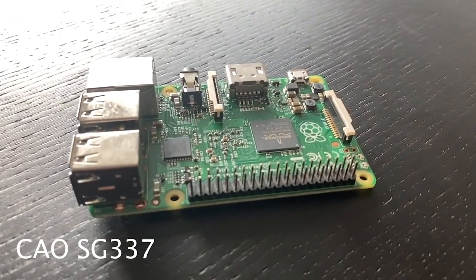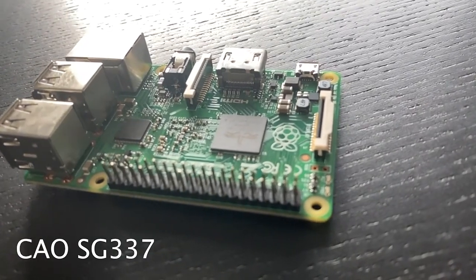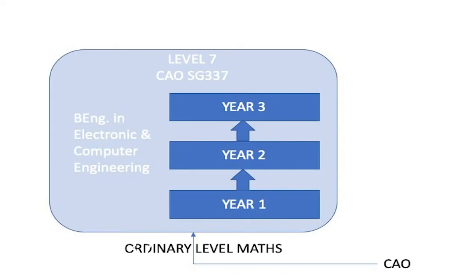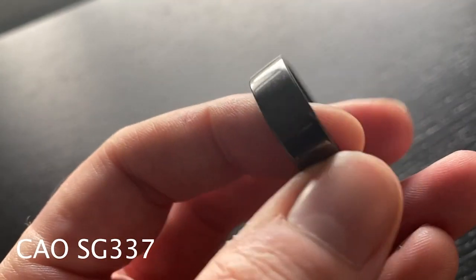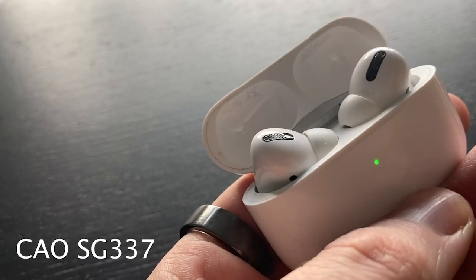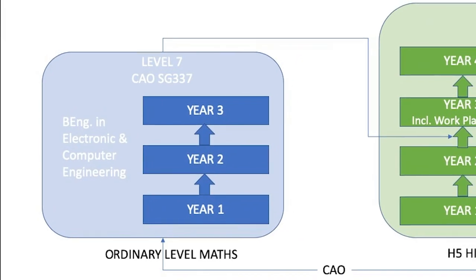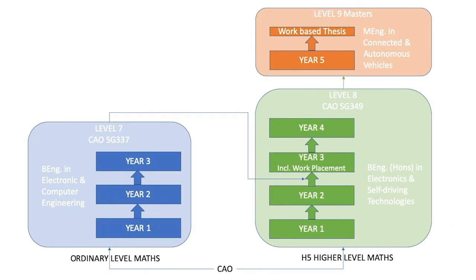If you are interested in technology or engineering but are not doing higher level maths, why not consider our Level 7 in Electronic and Computer Engineering? This is a three-year programme that looks at the design and development of embedded electronic systems — the medical devices that keep us healthy, the consumer devices that keep us entertained, or the control systems that keep us safe on the road. You can then progress onto the Level 8 in Electronics and Self-Driving Technologies, and from there to the masters. Check out the link below for more information.